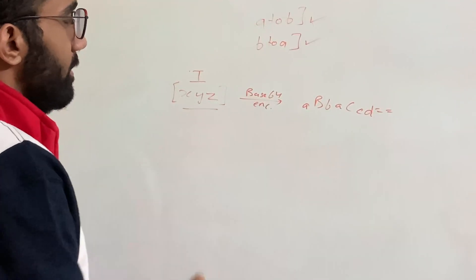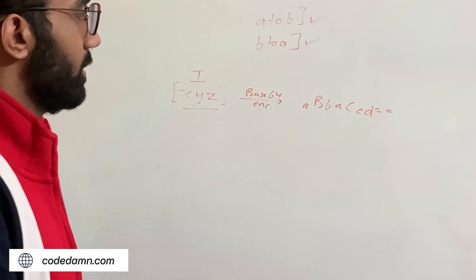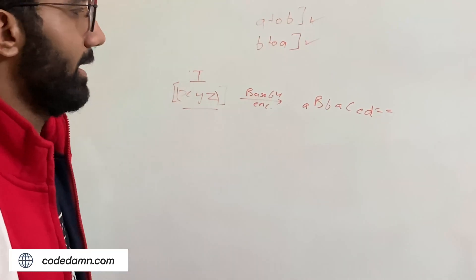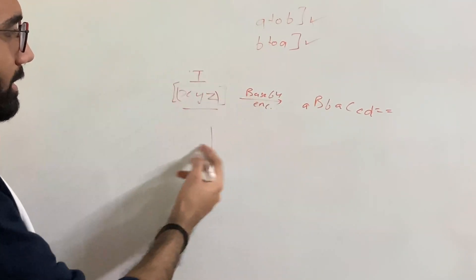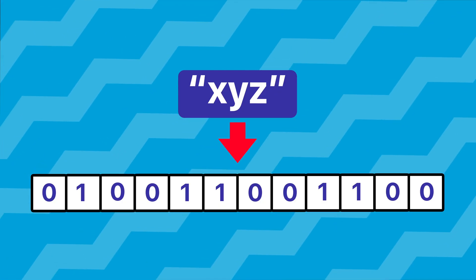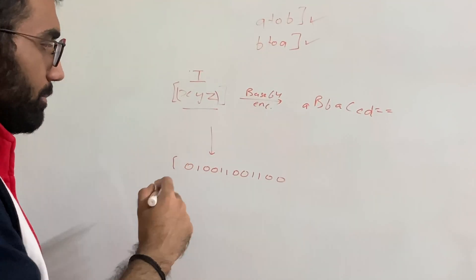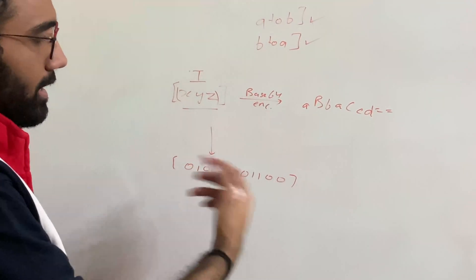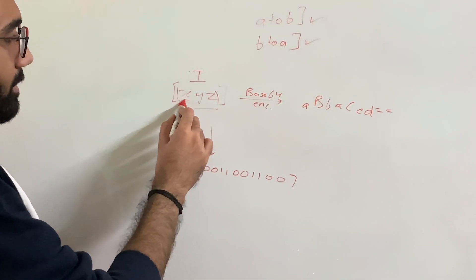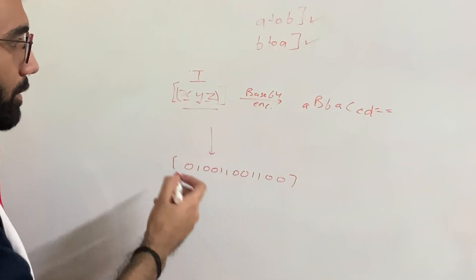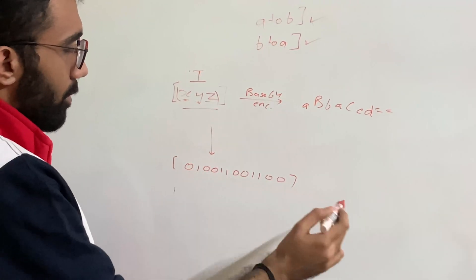To understand Base64, you have to understand that whatever string, number, or data you are working with, computers ultimately store everything as binary — zeros and ones. So a string in memory would be stored as binary, and in most cases one byte equals eight bits. Every character takes one byte or two bytes depending on your encoding. At the end of the day, the final input is in the form of binary.